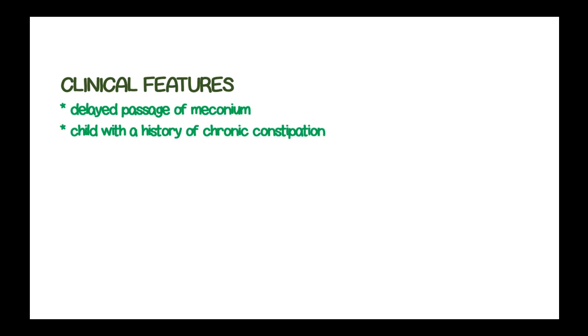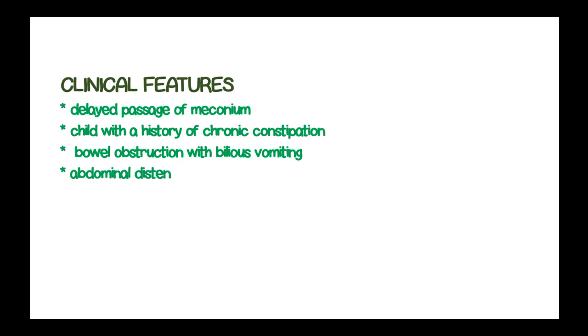The clinical features of Hirschsprung's disease are delayed passage of meconium after birth, a child with a history of chronic constipation since birth, bowel obstruction with bilious vomiting, abdominal distension, poor feeding, and failure to thrive in children.